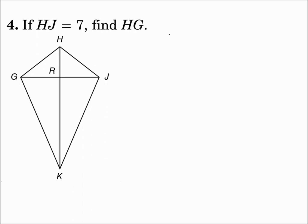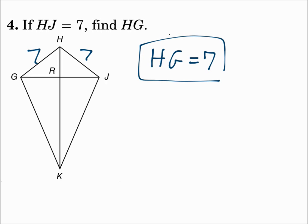Number four: if the measure of segment HJ equals 7, find the measure of segment HG. Kites have consecutive sides congruent on each end — two congruent sides on the top and two congruent sides on the bottom. HG and HJ are those congruent sides, so they're both 7. The measure of segment HG is 7. A kite has two pairs of consecutive congruent sides.